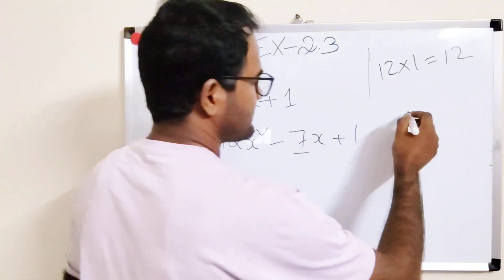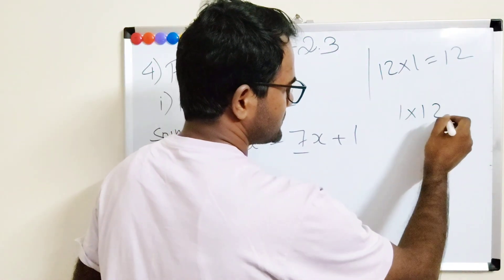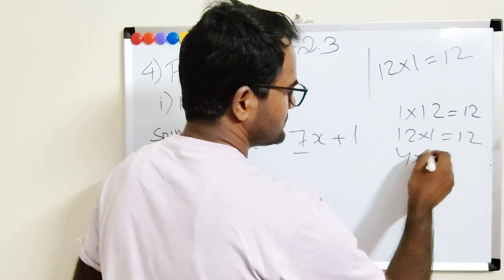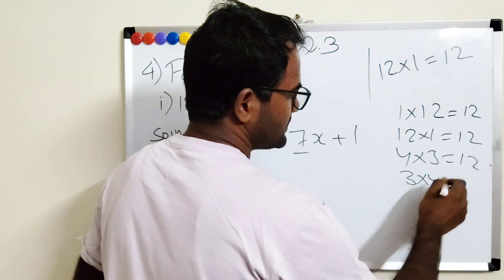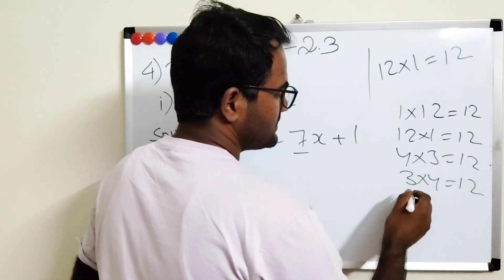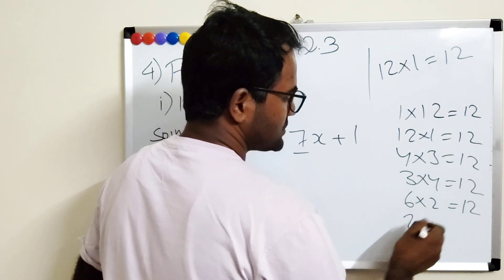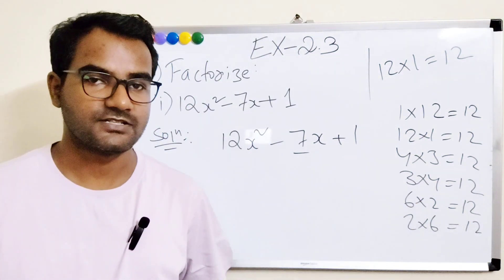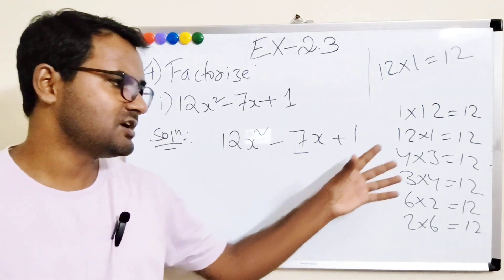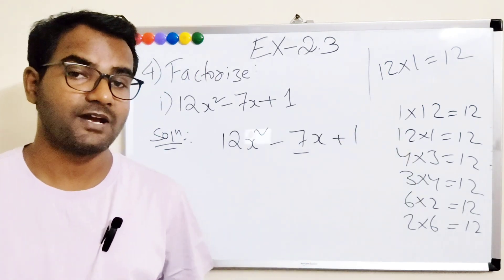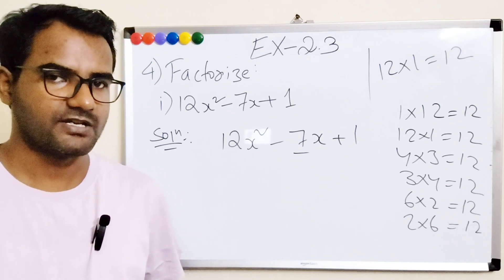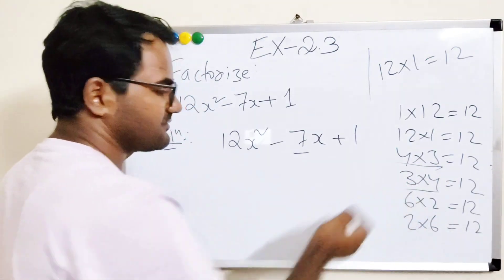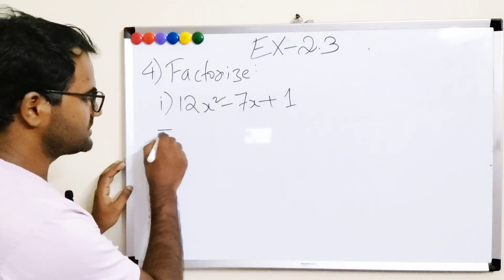To find those numbers, factorize 12: 1×12, 12×1, 4×3, 3×4, 6×2, 2×6. Observe which pair gives 7 when added or subtracted and 12 when multiplied. Here 4 and 3 work — minus 3 and minus 4 give minus 7x, and 3 × 4 = 12.